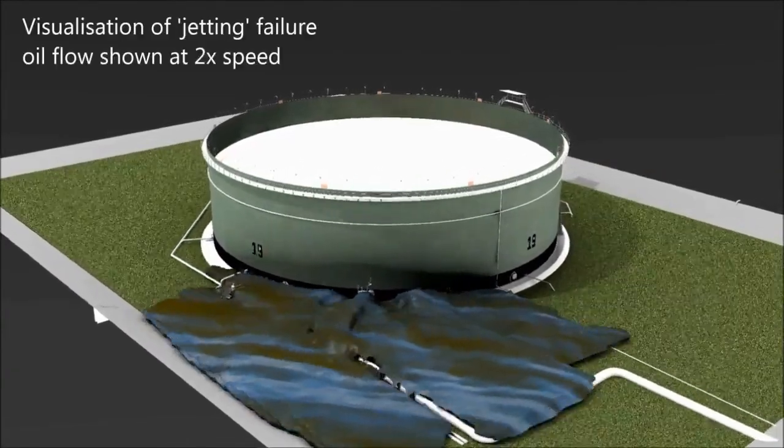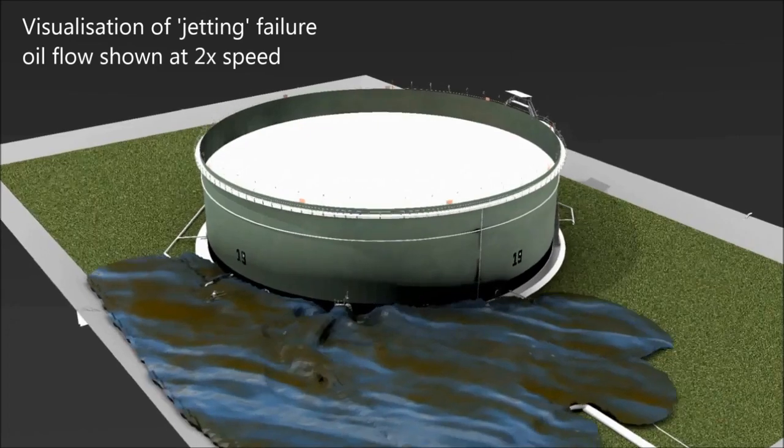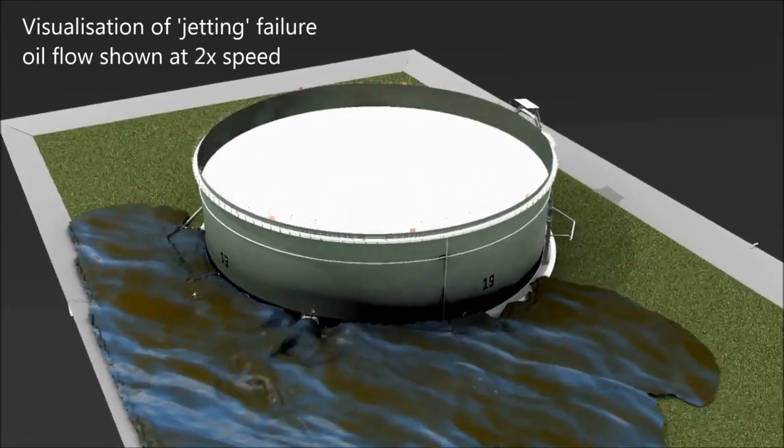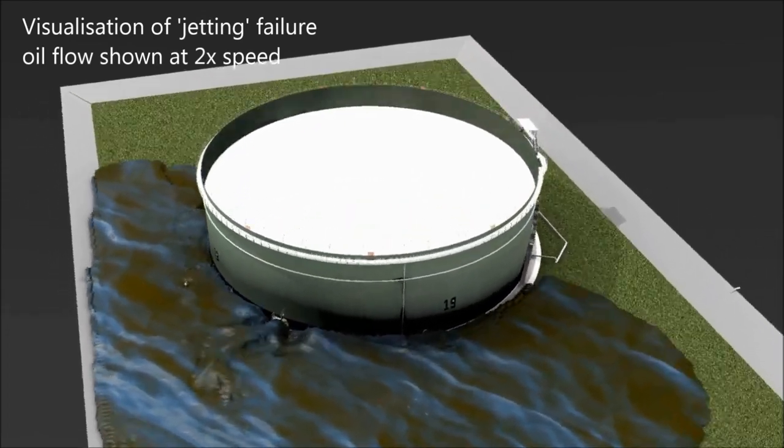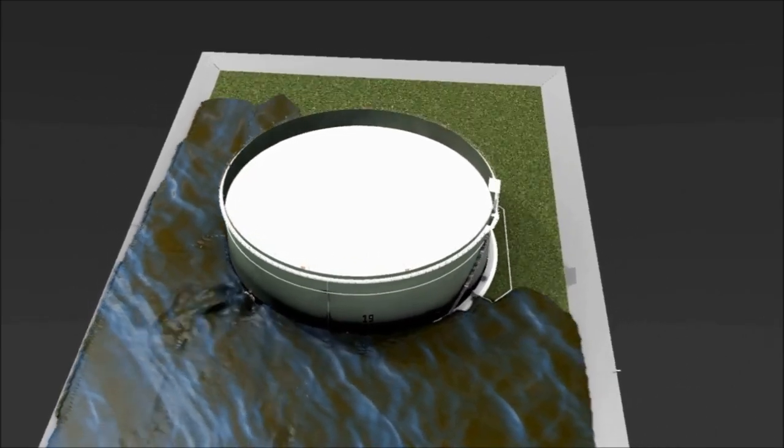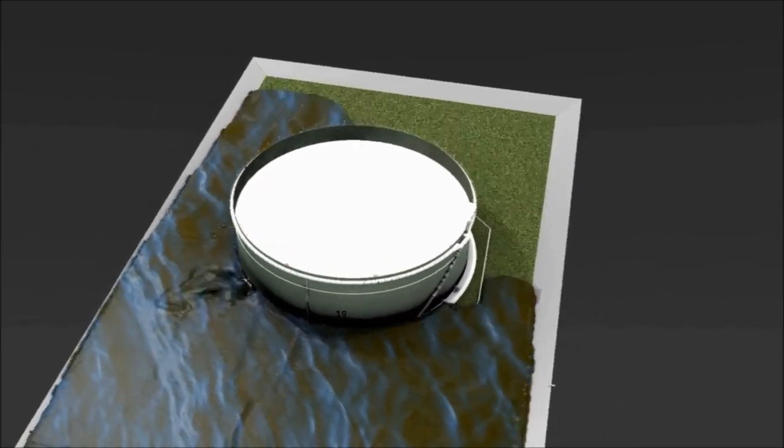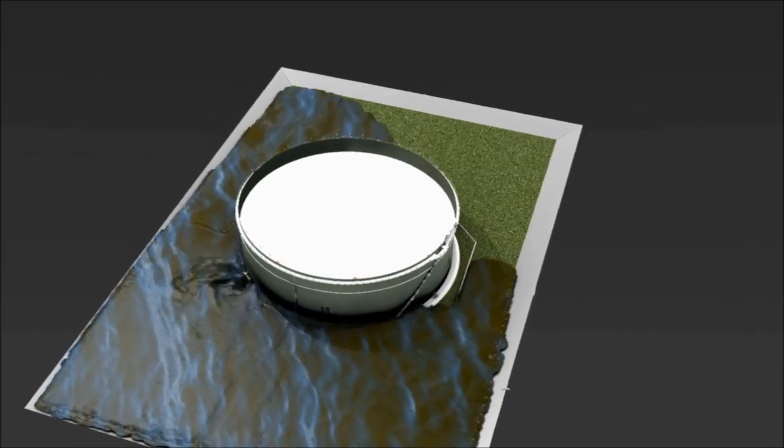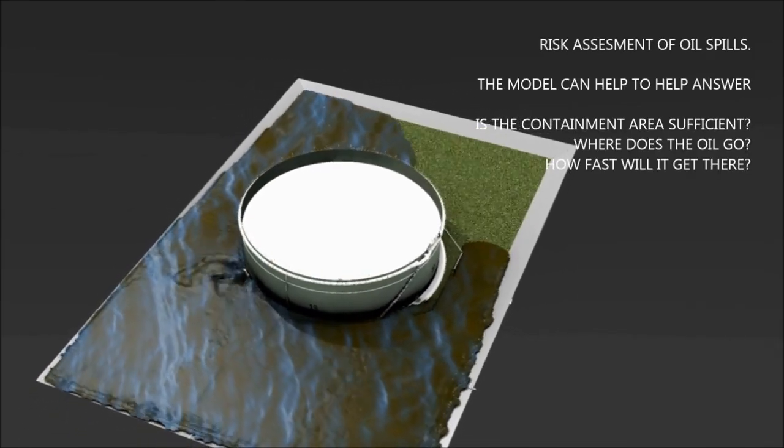While the probability of a catastrophic failure of the storage tank is low, such incidents do occur. Failure can be the result of a damaged pipe, or valve connection, or even partial removal of a small section of tank wall. Failures such as the one depicted here tend to be sudden events.